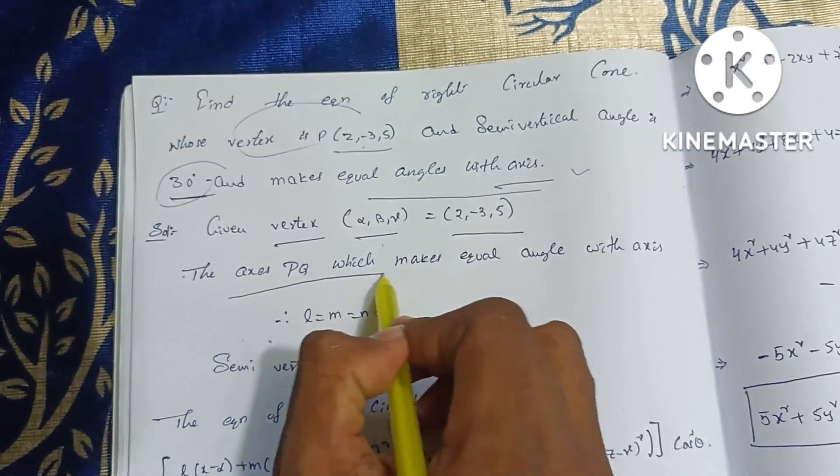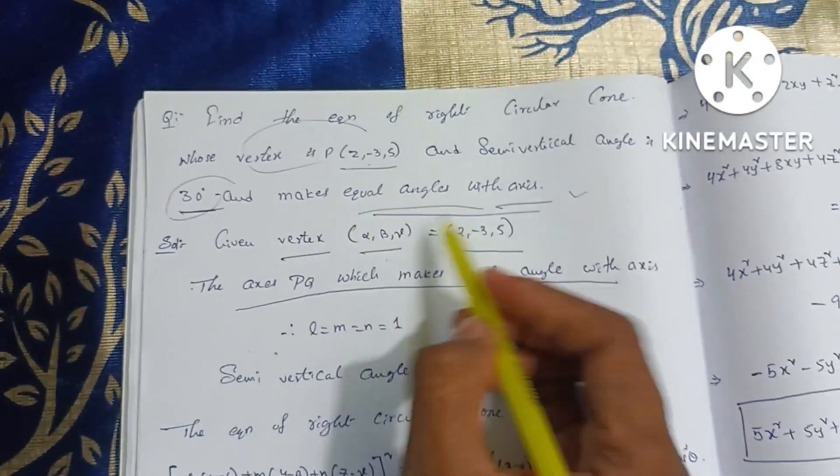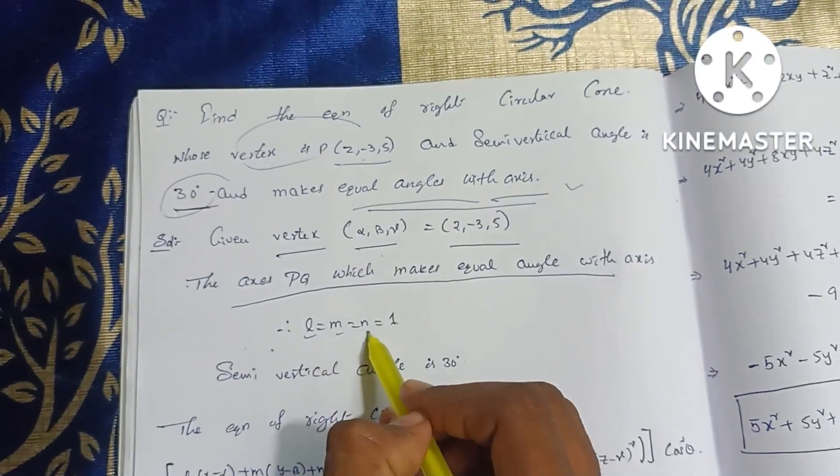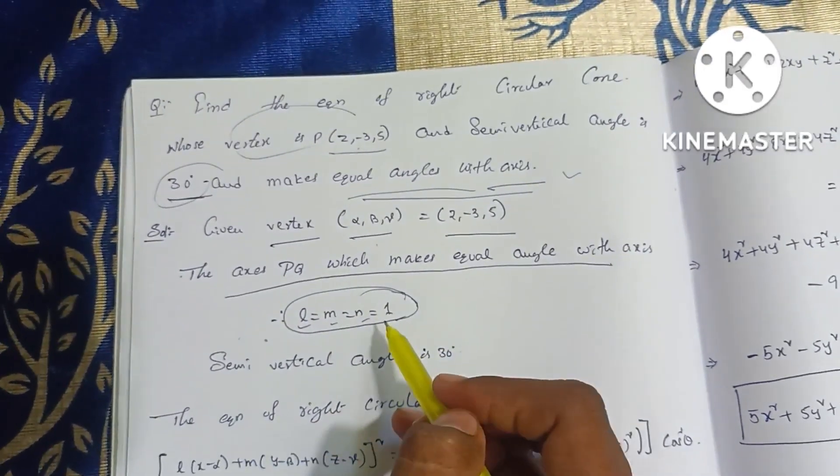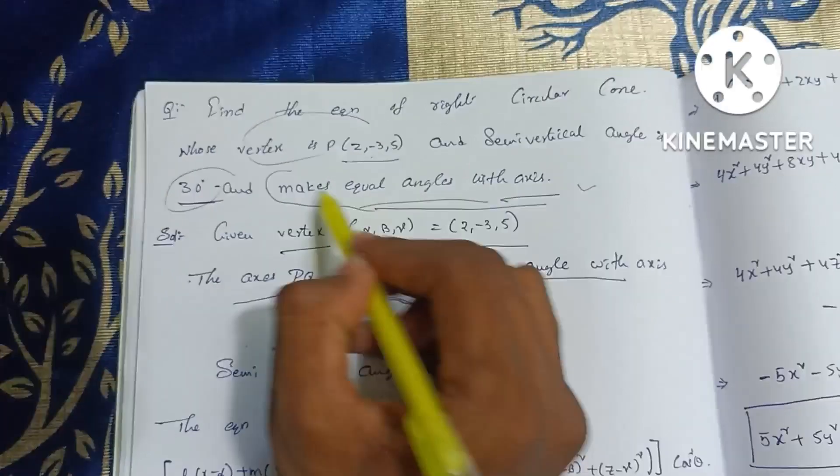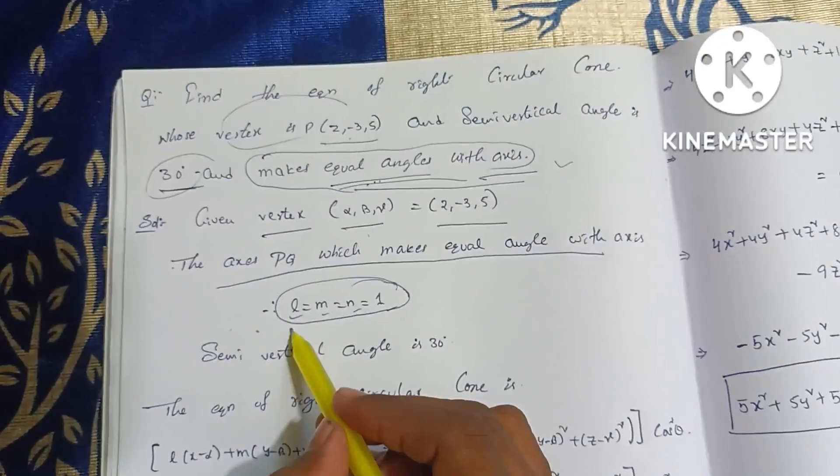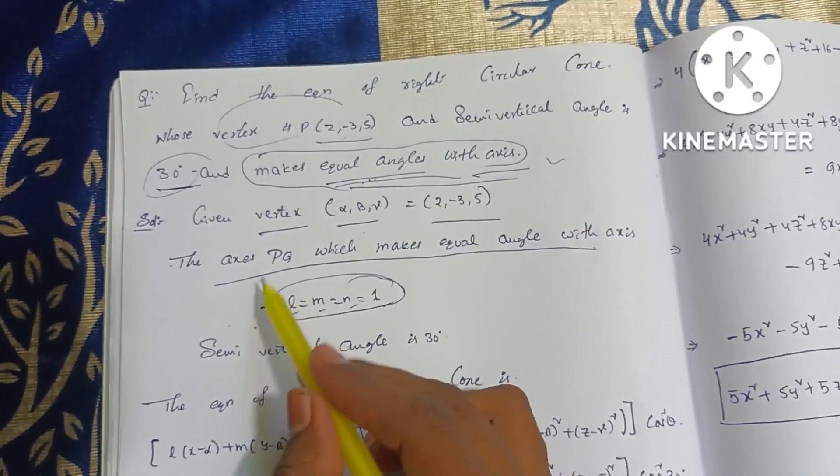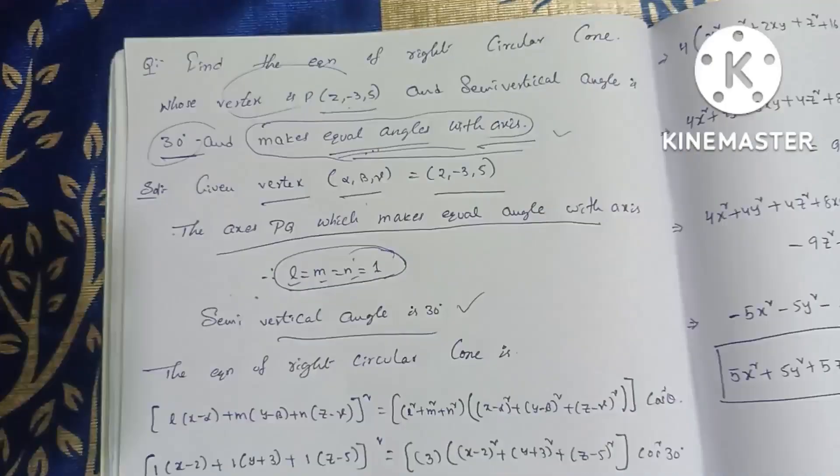The axis which makes equal angle with the axis. So we will show the equal angle. So L, M, N is equal to 1. So L value 1, M value 1, N value 1. If you don't have a line equation, you don't have any conditions here. Equal angle is L value 1, M value 1, N value 1. The semi-vertical angle is 30 degrees.